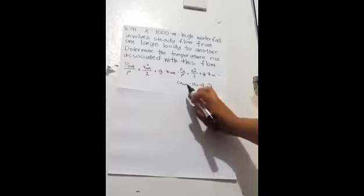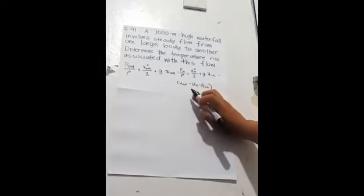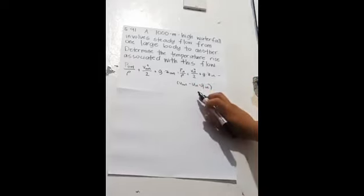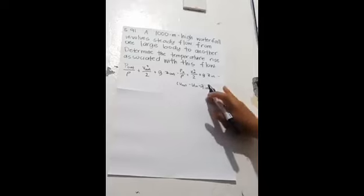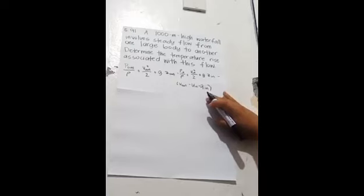So the term U out minus U in minus Q in stands for the total energy loss in terms of heat, where U out minus U in is the change of internal energy of the water flow, and Q in stands for additional heat transfer rate transferred to or out of the water.